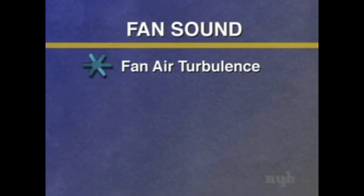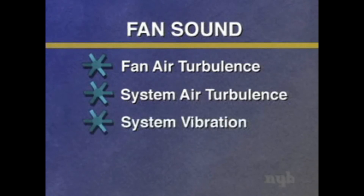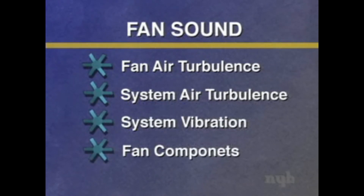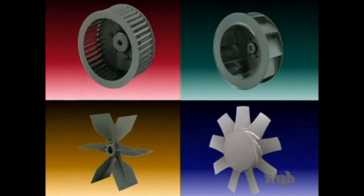Fan sound is generated in four basic ways: fan air turbulence, which is dependent upon the fan wheel design; system air turbulence; system vibration; and fan components. Because there is a wide variety of different flow, pressure, and gas stream requirements, a variety of different fan designs have been developed. For example, there are three basic centrifugal wheel designs: forward curve, backward incline, and radial. There are also a variety of axial wheel designs. As you might expect, each has unique sound characteristics.